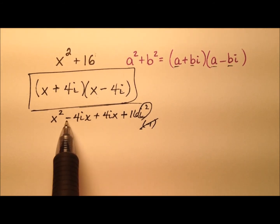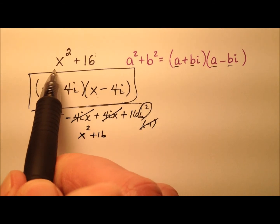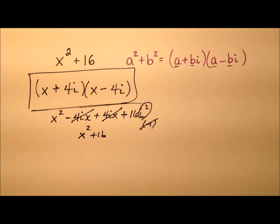And right away too, we see that these middle terms actually cancel each other out, and we're left with x squared plus 16, which was our original problem. So we see that our sum of squares factorization worked well in this example.